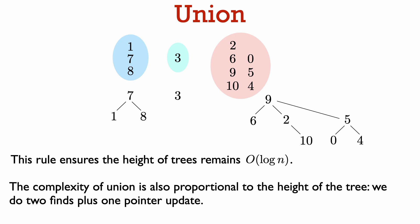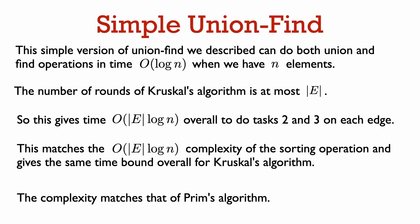The complexity of the union operation is also proportional to the height of the tree. We do two find operations to find the root elements, plus constant additional work to update the parent pointer of the root of the smaller tree. So under this scheme where the heights of the trees is O(log n), the complexity of both union and find becomes O(log n). We've now given a high-level description of a simple union-find data structure that does both operations in time O(log n).